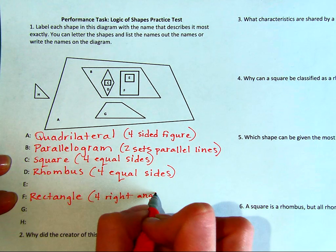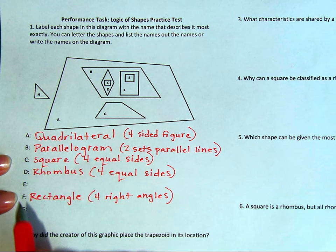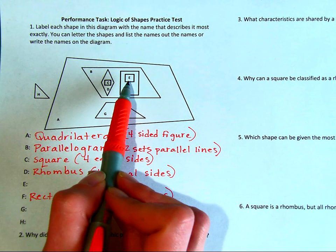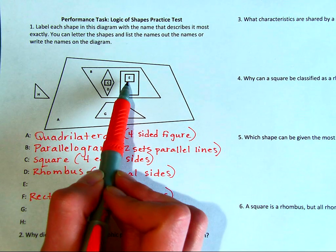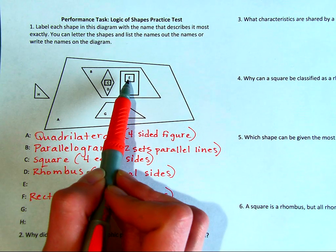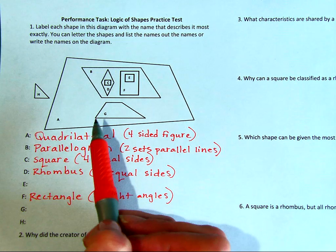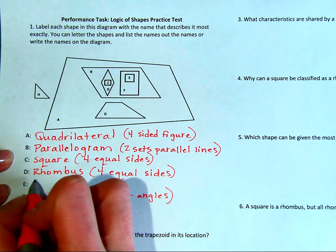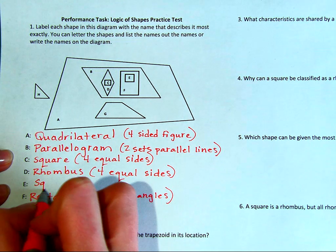Figure E is inside of figure F because it also has two sets of parallel lines, the opposite sides are equal, and it has four right angles. So it is a special rectangle because all of the sides are equal in length.